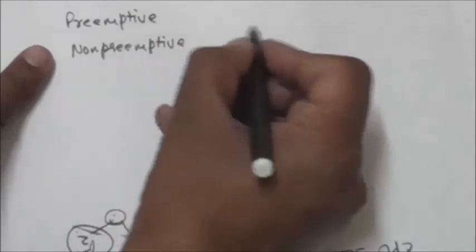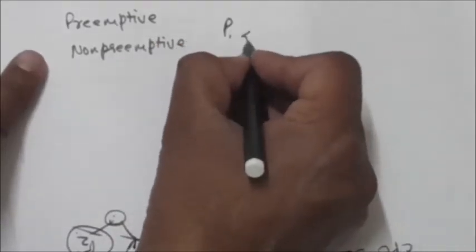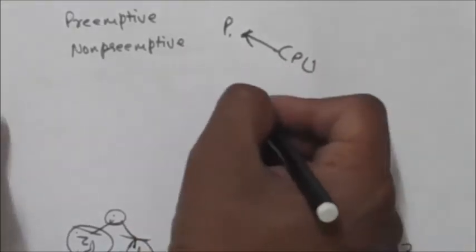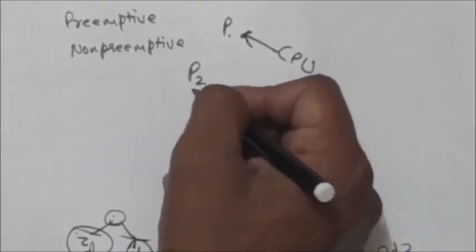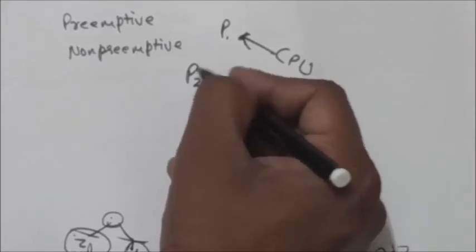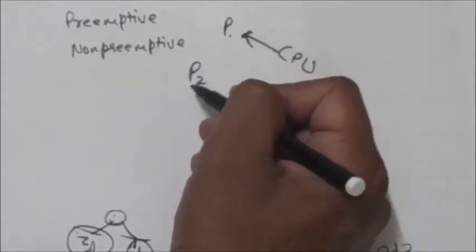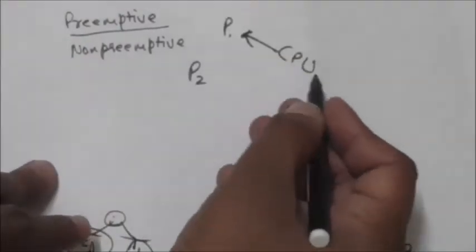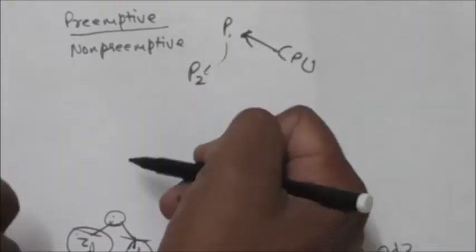Priority scheduling can be preemptive or non-preemptive. Suppose the CPU is allocated to process P1 and a new process P2 arrives in the ready queue with a higher priority than P1. If the algorithm is preemptive, the CPU will be taken away from P1 and given to P2.